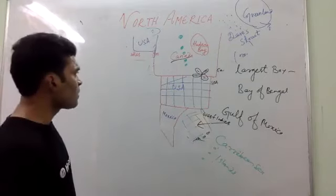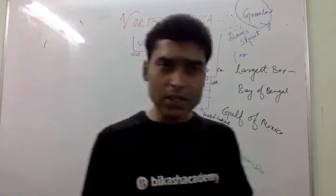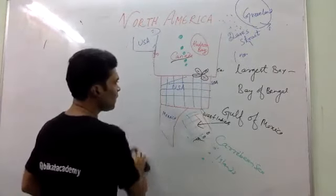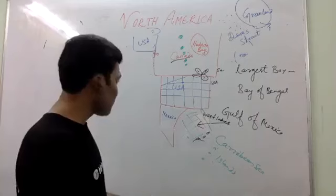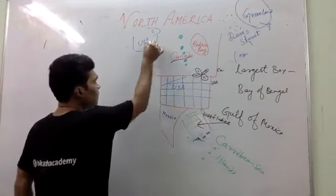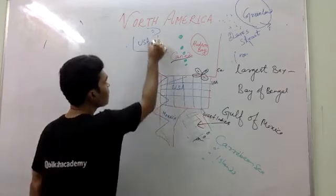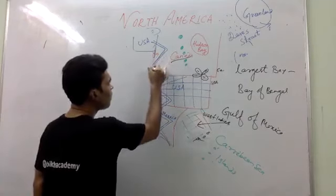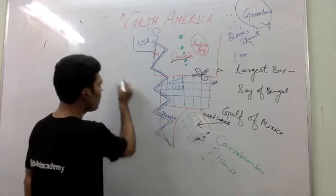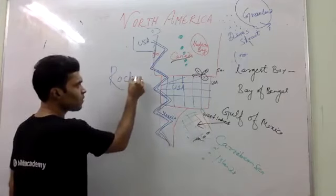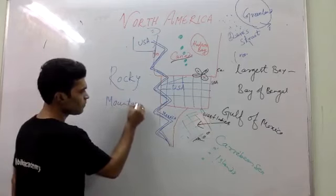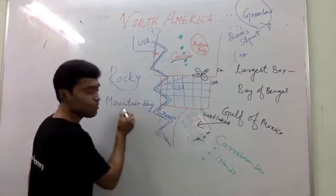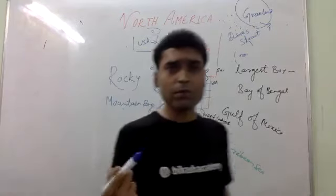Now we will focus on the mountain ranges of North America. Here is one mountain range — we call this the Rocky Mountain range. The Rocky Mountain range stretches from north to south on the western side of North America — this point you have to keep in mind.